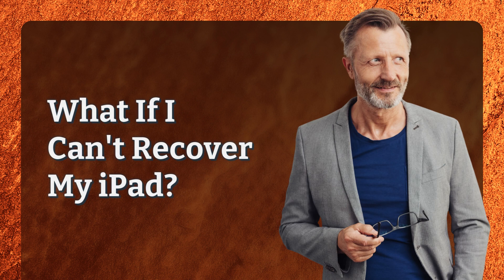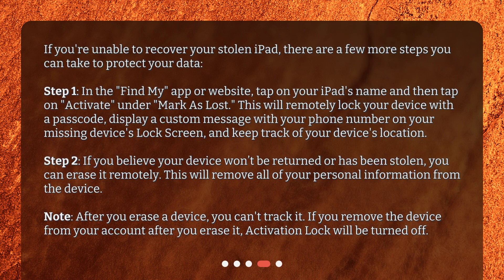What if I can't recover my iPad? If you're unable to recover your stolen iPad, there are a few more steps you can take to protect your data. Step 1: In the Find My app or website, tap on your iPad's name and then tap on Activate under Mark as Lost. This will remotely lock your device with a passcode, display a custom message with your phone number on your missing device's lock screen, and keep track of your device's location. Step 2: If you believe your device won't be returned or has been stolen, you can erase it remotely. This will remove all of your personal information from the device. Note: after you erase a device, you can't track it. If you remove the device from your account after you erase it, Activation Lock will be turned off.